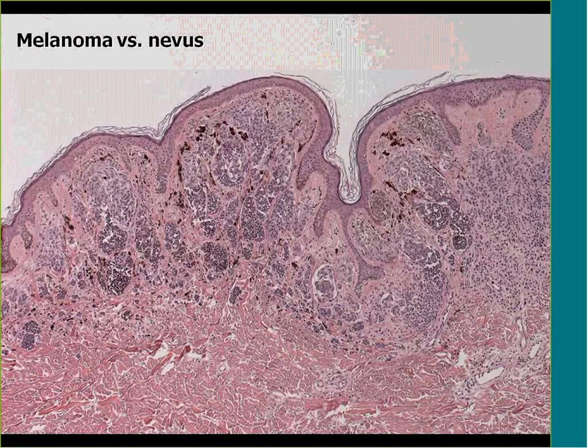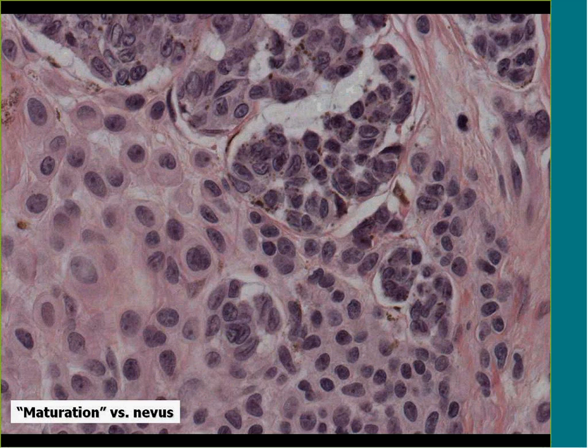Nevoid melanomas, especially in older patients, present challenges when distinguishing melanoma from a coexisting or underlying nevus. Here's an example with invasive melanoma on one side and benign nevus on the other — where they merge, determining the true depth is very problematic. You can try HMB45 staining, which may stain melanoma strongly and nevus negatively, but that doesn't always help. The best approach is to make your best estimate and explain your reasoning — noting that atypical cells extend to a certain depth and then merge with a benign-appearing component.